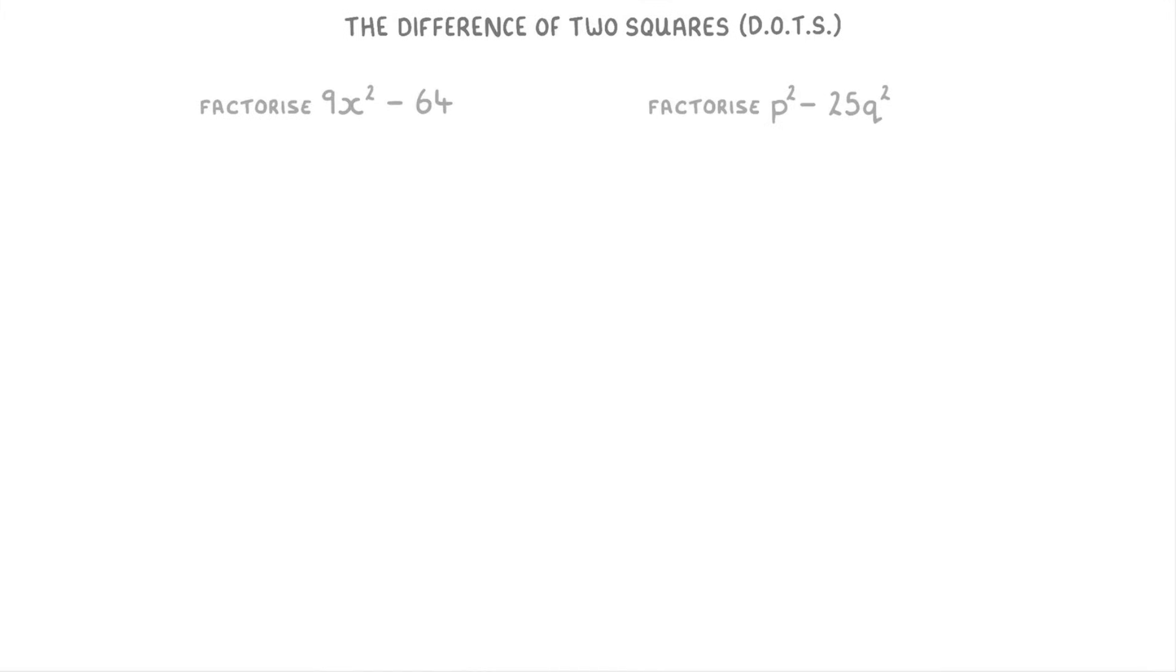Let's try two more to finish. In this first one we're trying to do 9x squared minus 64. We can square root the 9x squared to get 3x and square root of 64 to get 8, meaning we get the brackets 3x plus 8 and 3x minus 8.